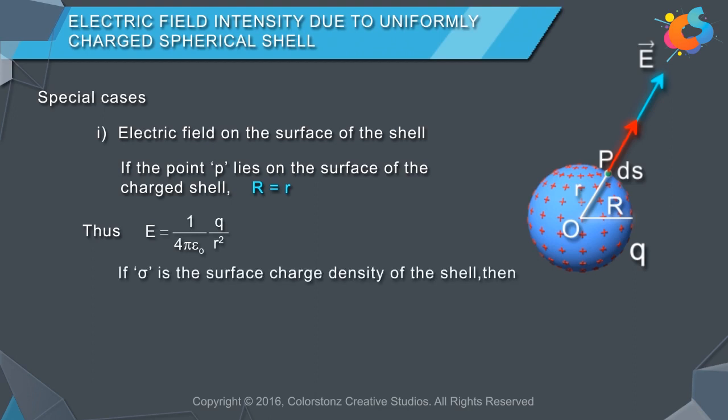If σ is the surface charge density of the shell, then σ = Q/4πR², or Q = 4πR²σ. Therefore, E = (1/4πε₀) × (4πR²σ/R²). E = σ/ε₀.